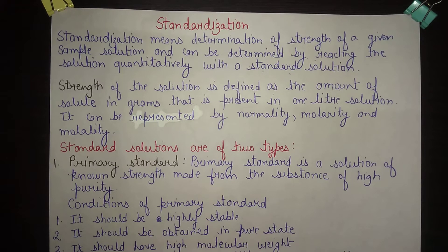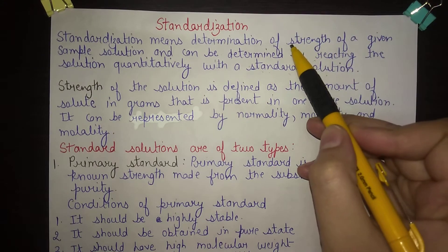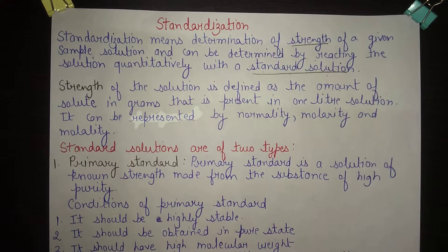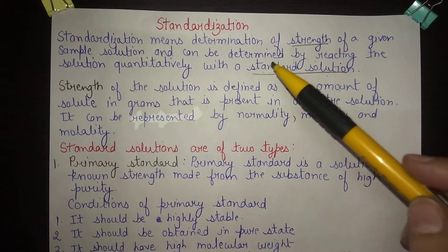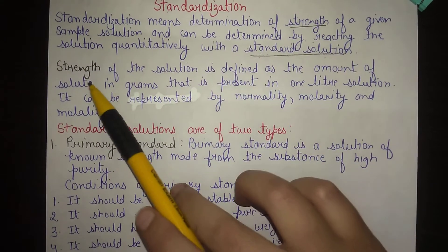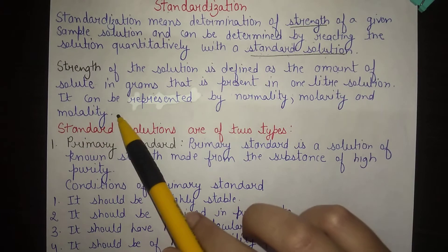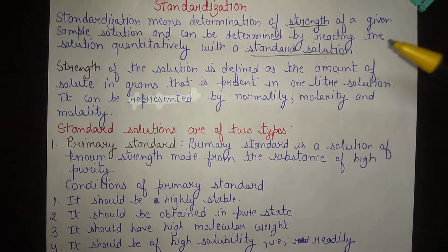How do we determine the strength of a solution? The strength of a solution is determined by titrating it with a standard solution. Two terms are very important here: firstly, strength, and secondly, standard solution. Strength of the solution is defined as the amount of solute in grams present in one liter of solution.